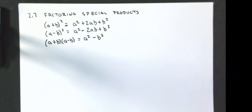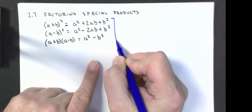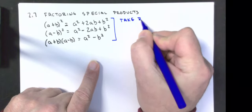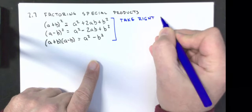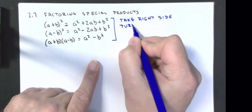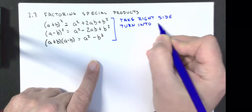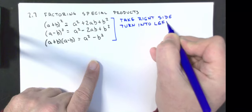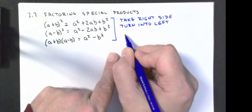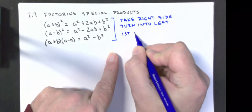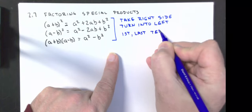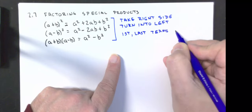What we're going to do now is take the right side and turn it into the left. Notice that in these special products, the first and the last terms are perfect squares.